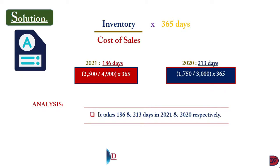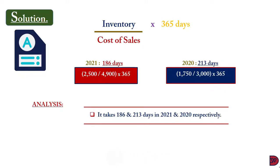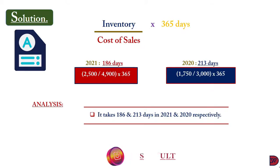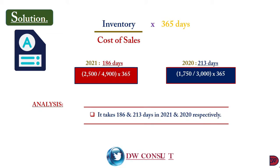We can also credit management for having an effective sales and marketing strategy, being able to sell at a reduced rate. However, the business still has work to do, because selling inventory at an average of 186 days is still highly concerning. Again, this should be compared to the standard set in the business or in the industry before a definitive analysis can be made.